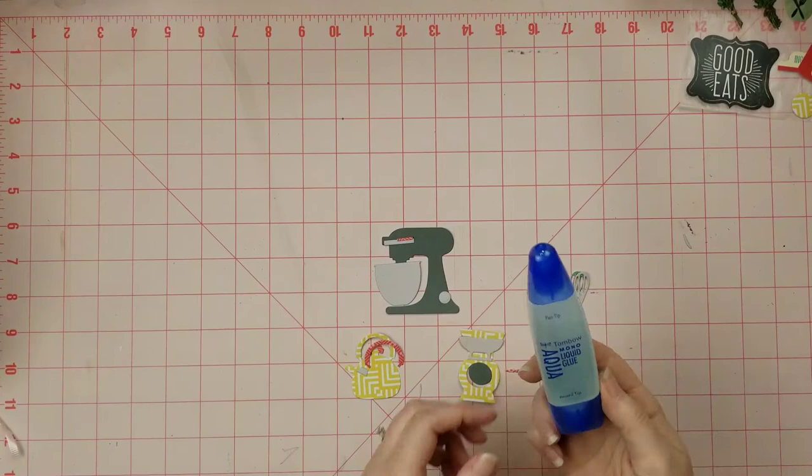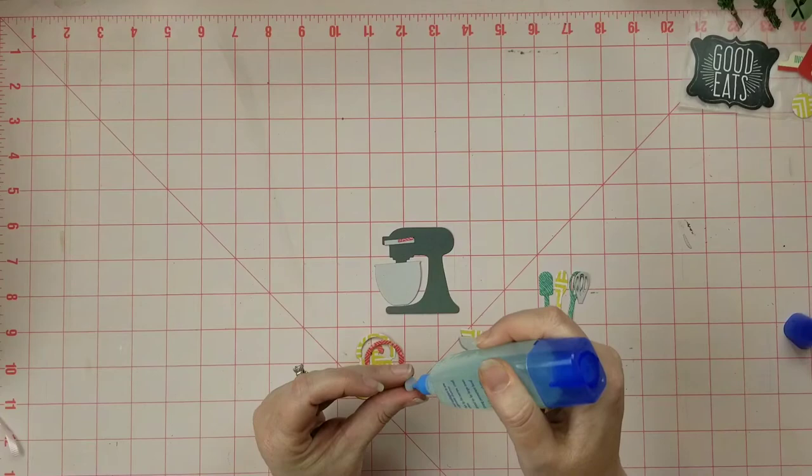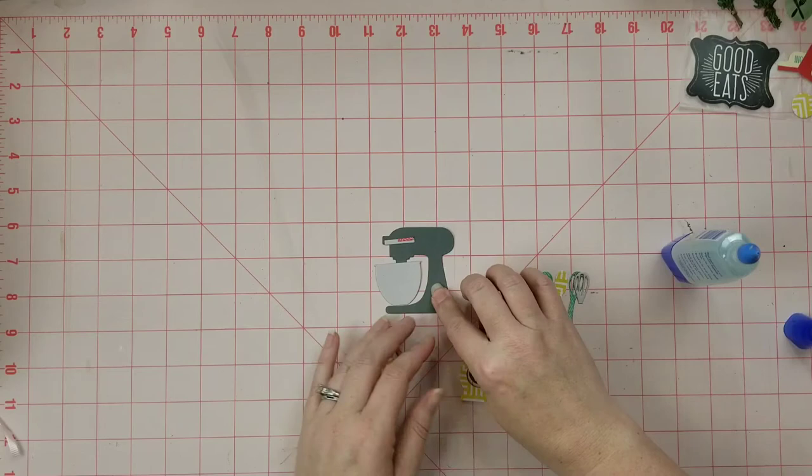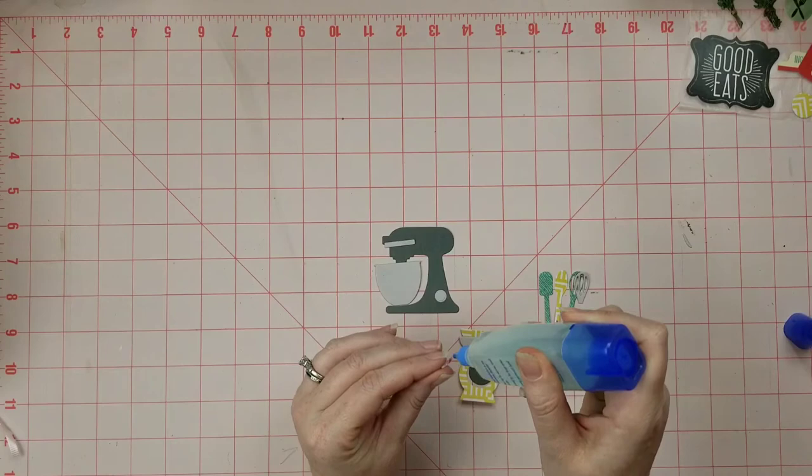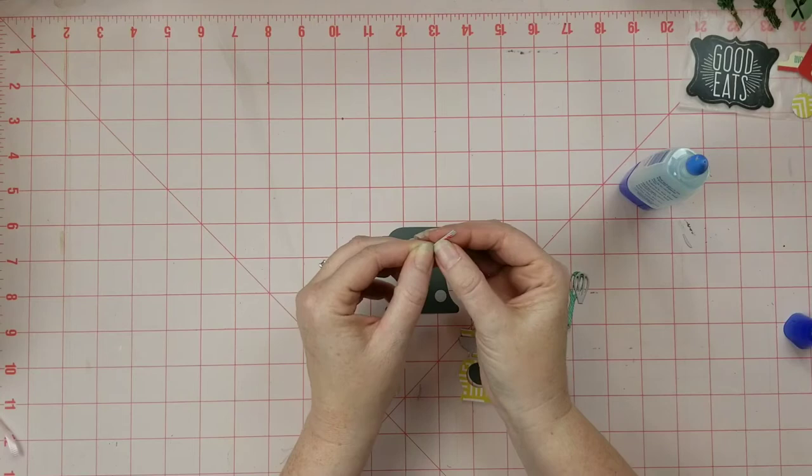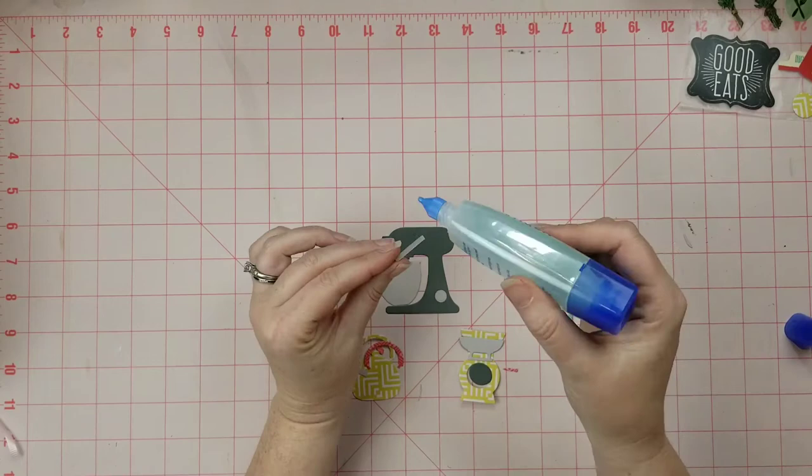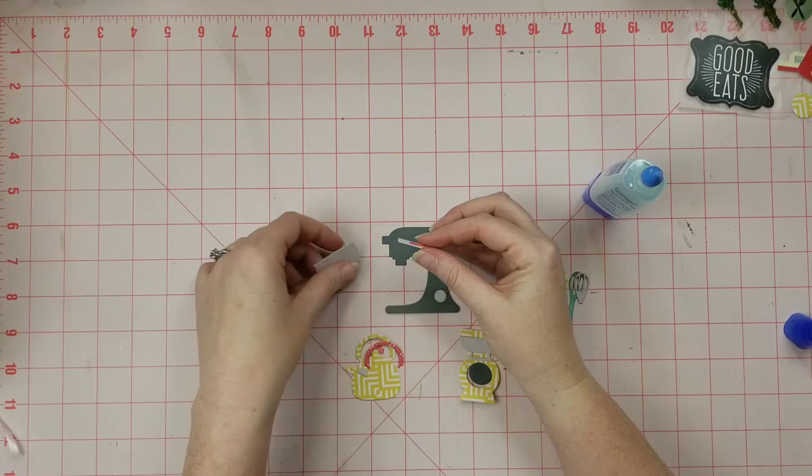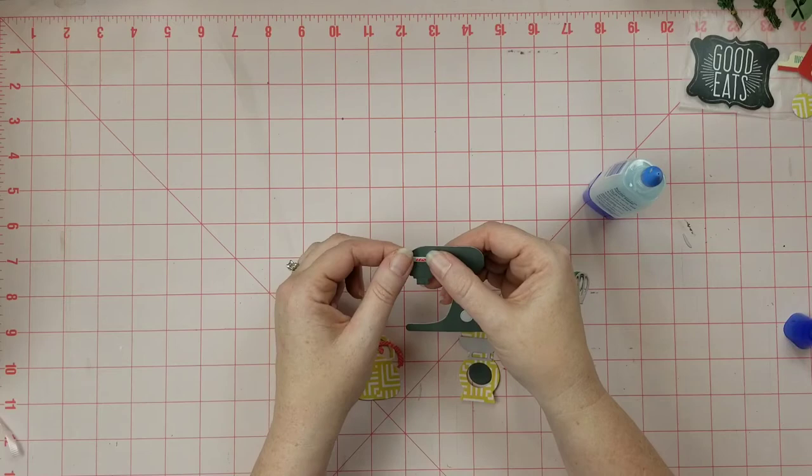Now here I am using my Tombow Mono liquid glue aqua. The reason why I like to use this instead of my Scotch quick dry for doing paper piecing is because it doesn't dry quite as fast, so I have time to kind of move things around. As you can see here on this little accent piece, I can move that little red piece all over the place to get it exactly where I want it. Once it dries it's clear so that's good, but also it dries kind of hard. If you are stacking paper, it makes it to be almost like chipboard, so it's really strong.